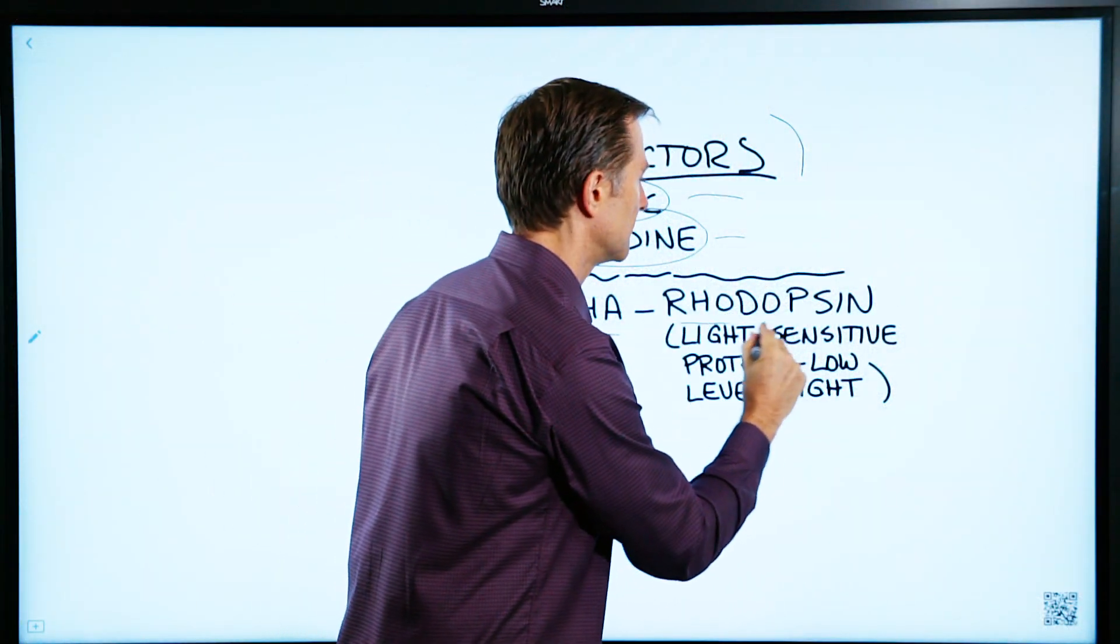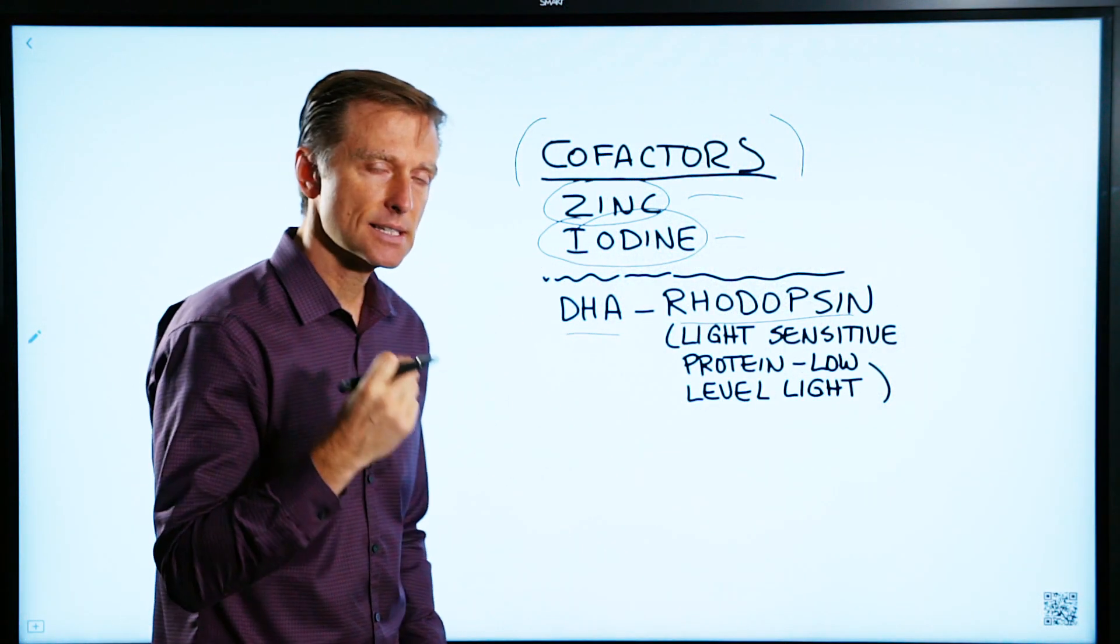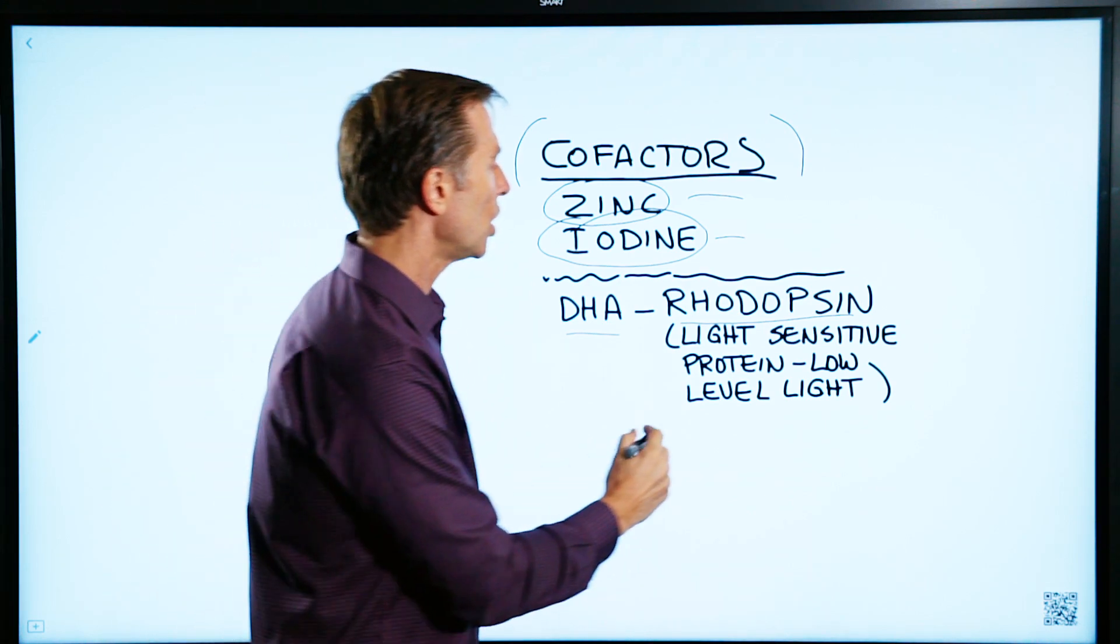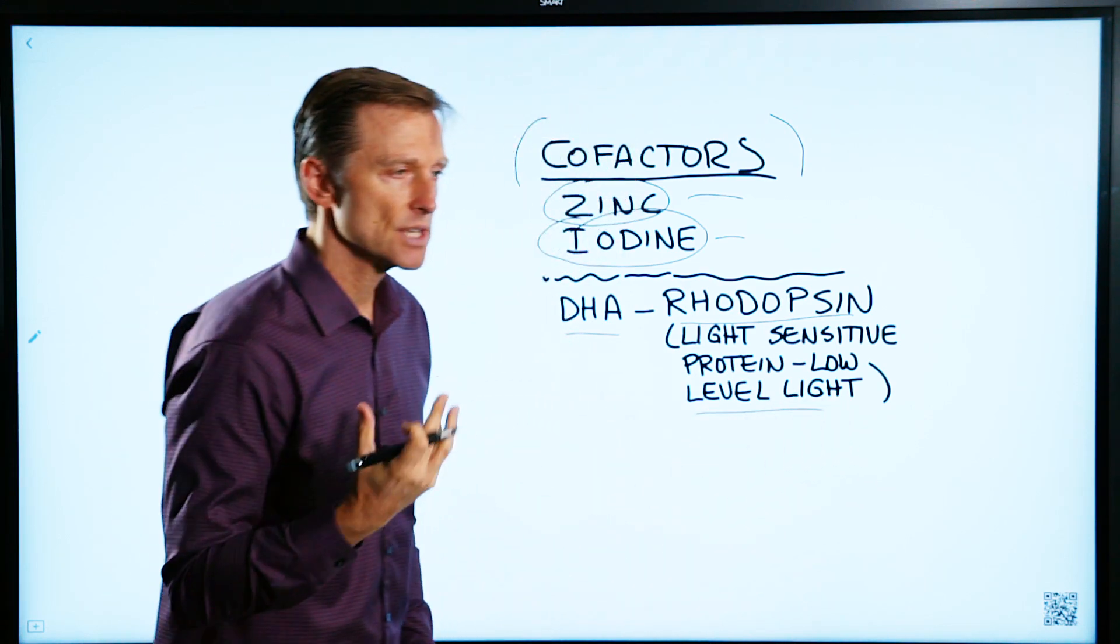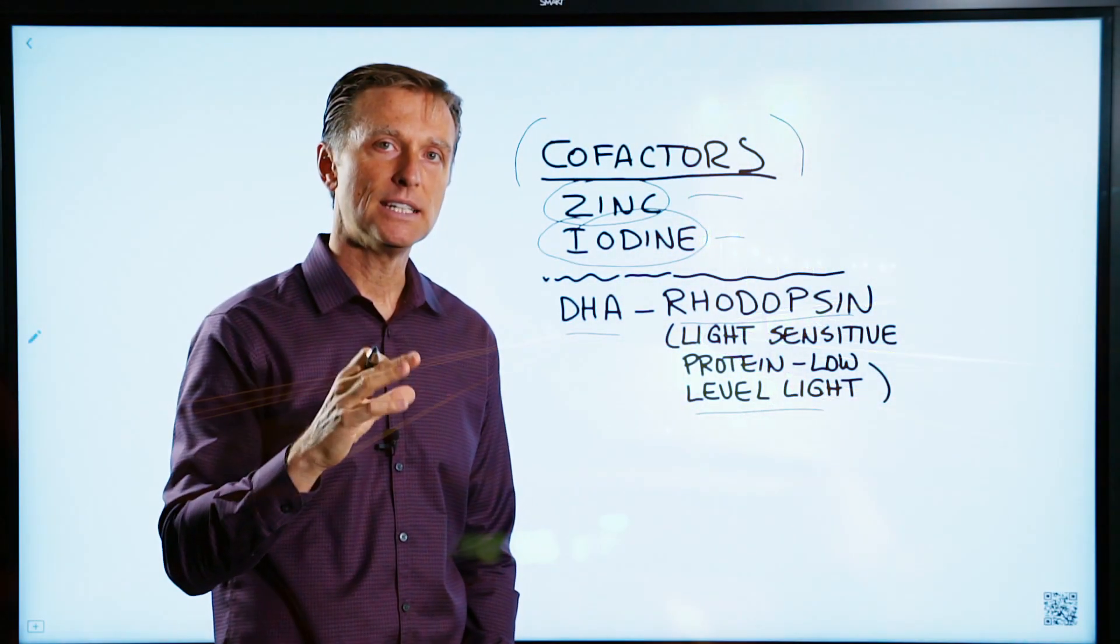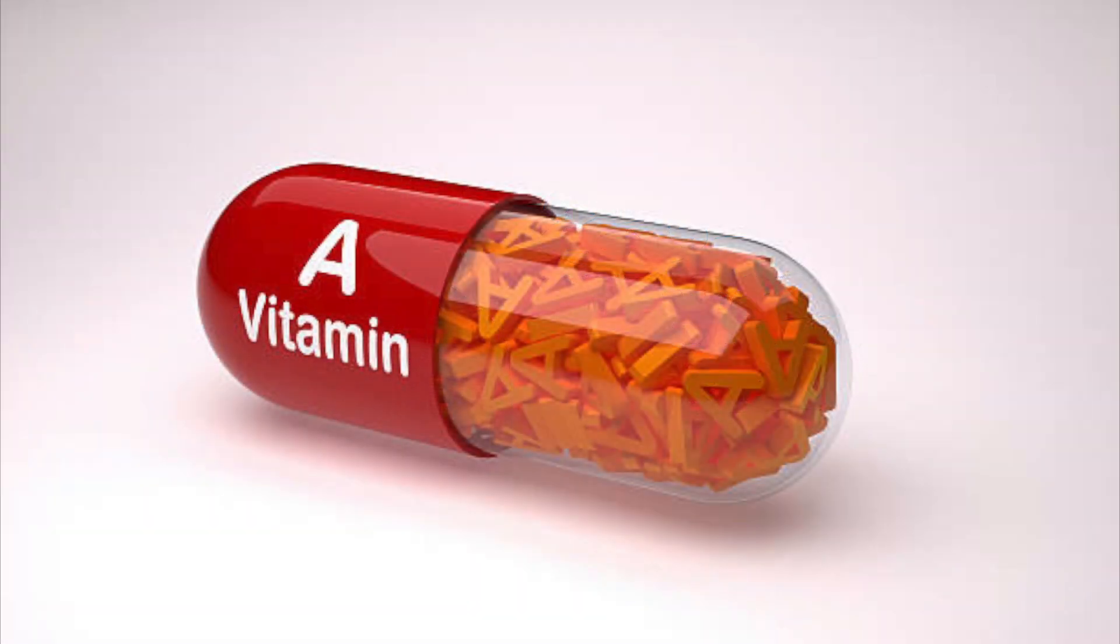DHA is also needed to make something called rhodopsin. Rhodopsin is a light-sensitive protein in the eye, mainly involved with low-level light. For example, if you're driving at night and it's hard to see in the dark and adjust, you may need DHA or you could also need vitamin A.